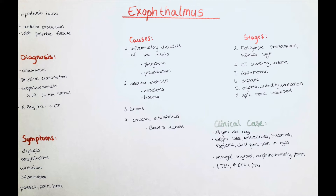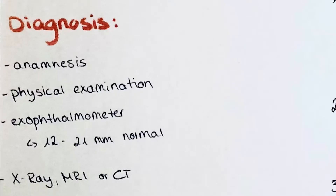Exophthalmos is also called protrusio bulbi. The diagnosis of this disorder is done by anamnesis and physical examination, or also by the help of a few devices. One of those is called an exophthalmometer. It looks a little bit like a ruler with two perpendicular measuring aids, and the protrusion of the eyeball is measured with it.